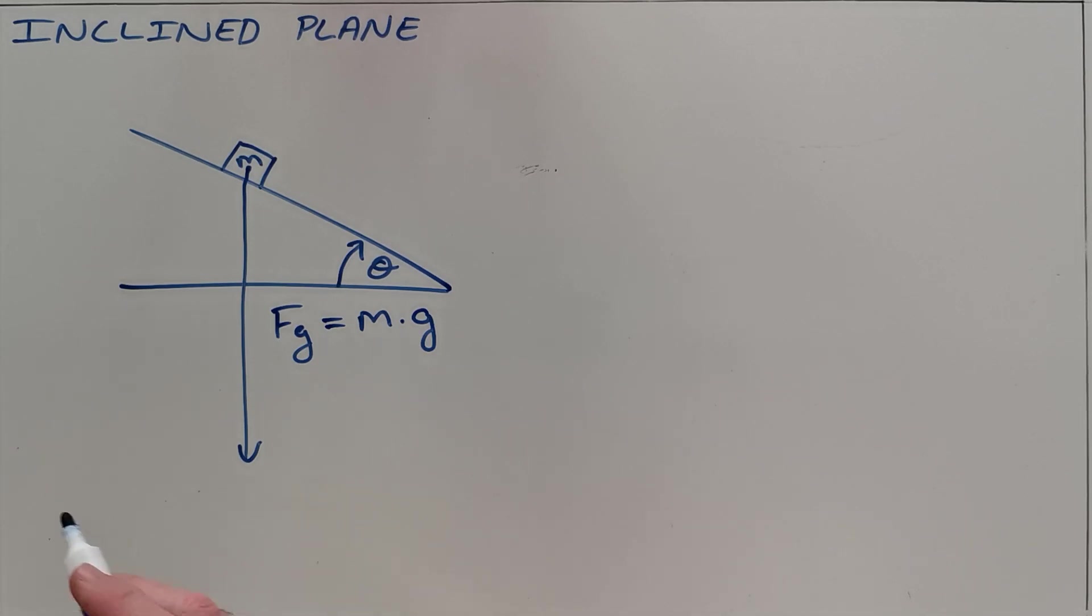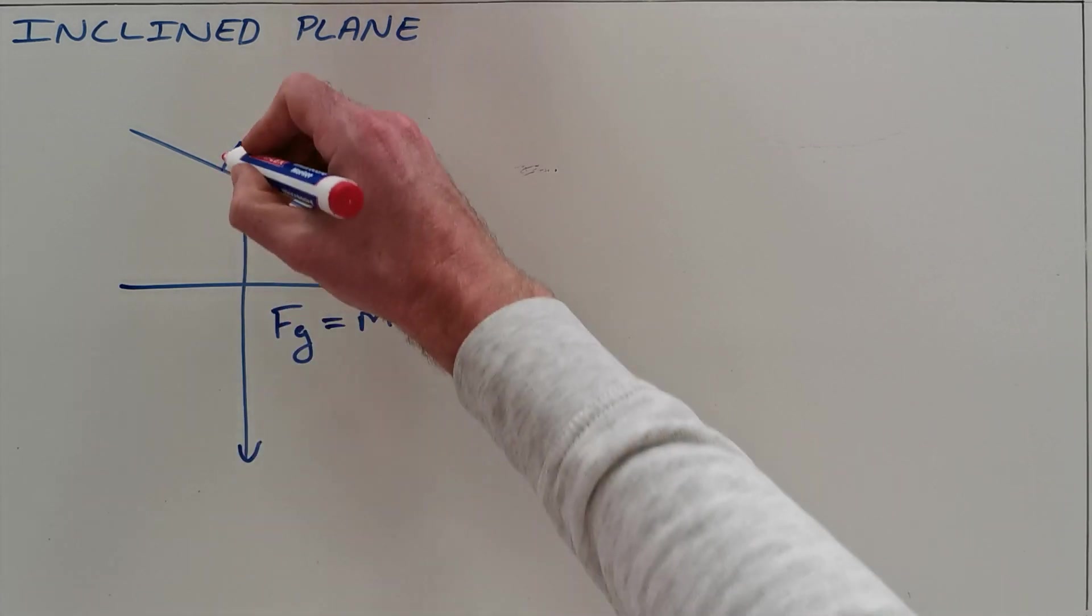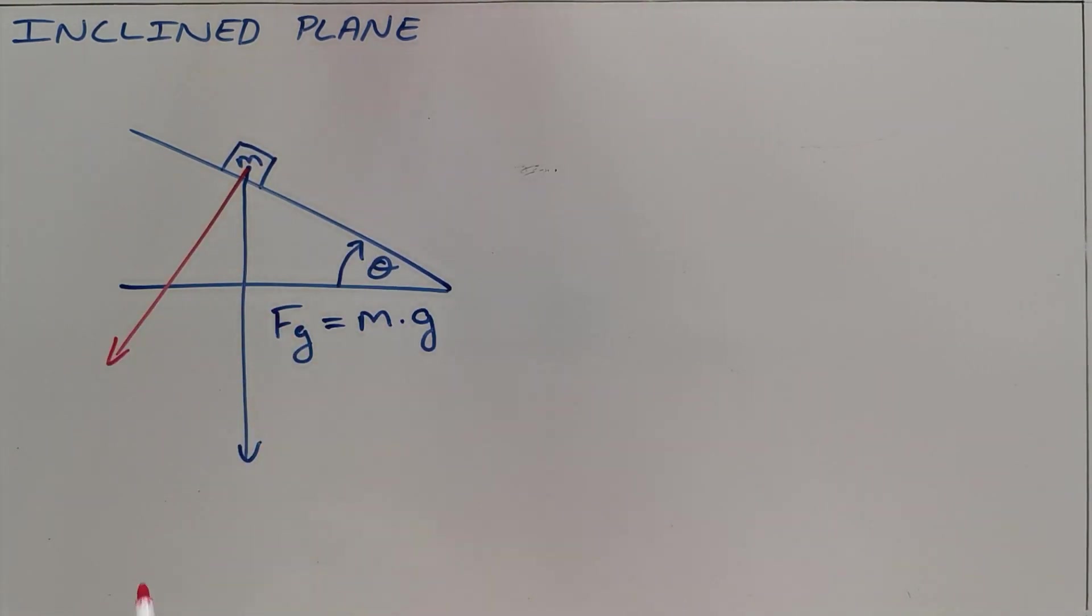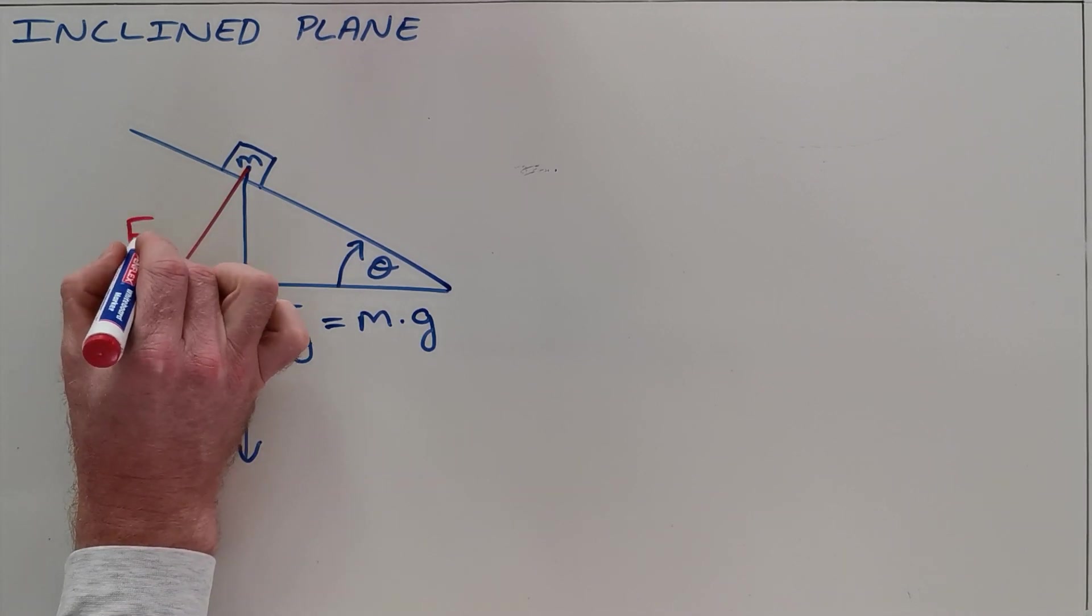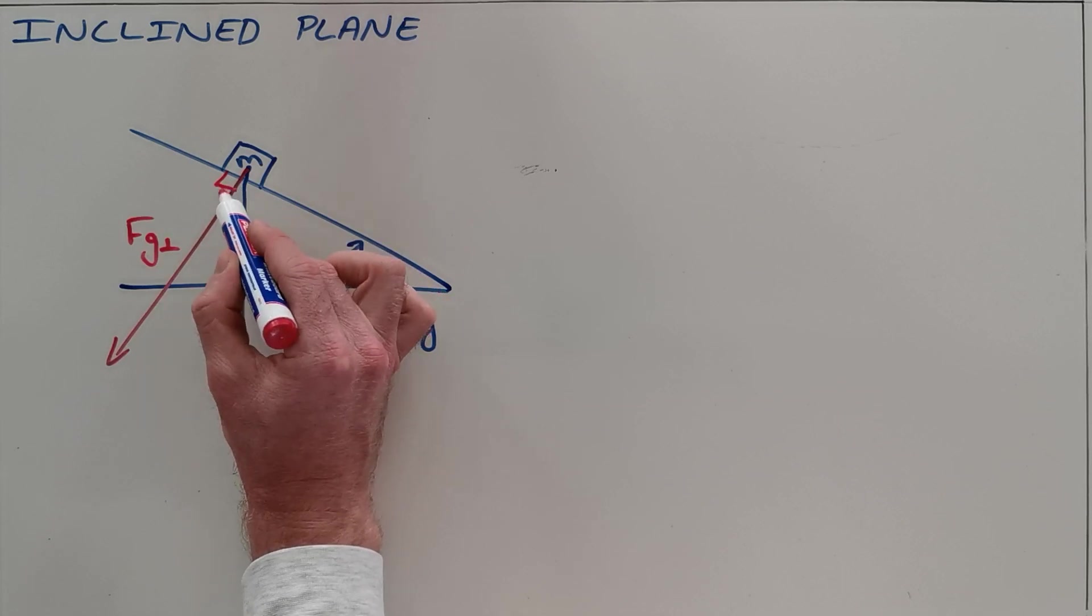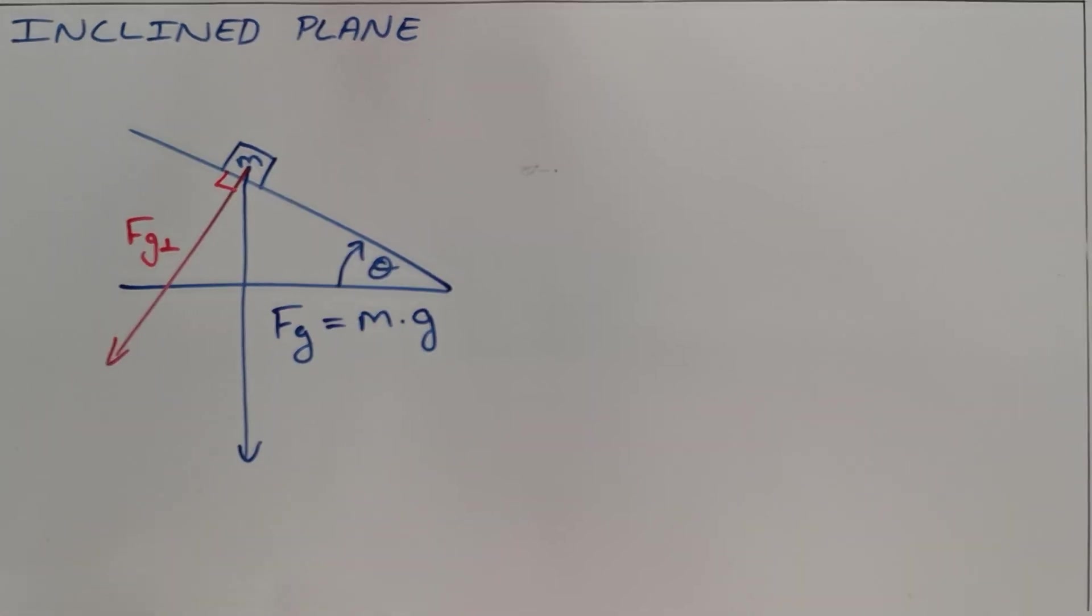Once we have done that we can then resolve this into those two components. Those components being the component of gravity that pulls this object into the slope and we call that Fg perpendicular. The reason for that being that this force is always perpendicular to the slope.